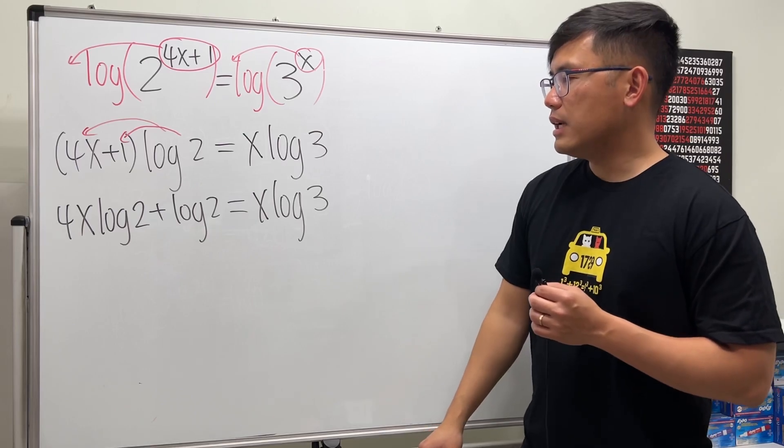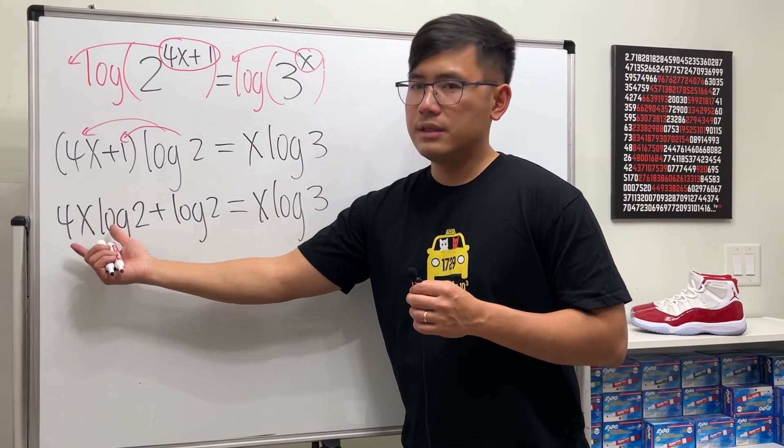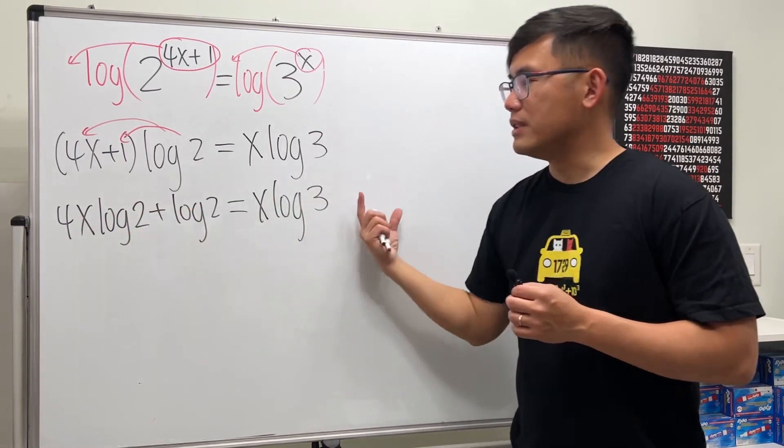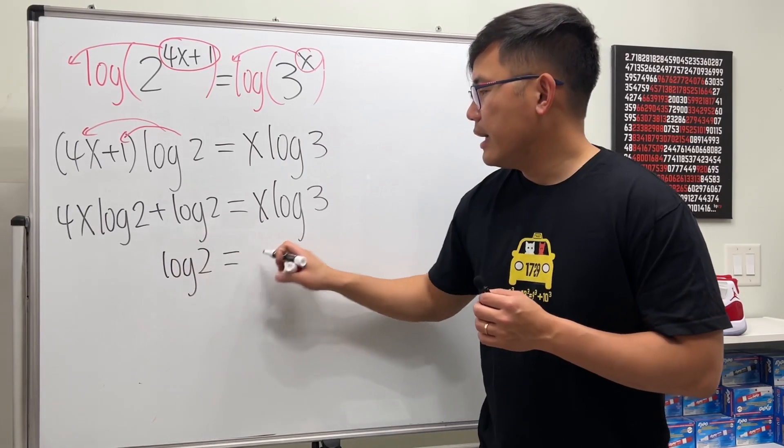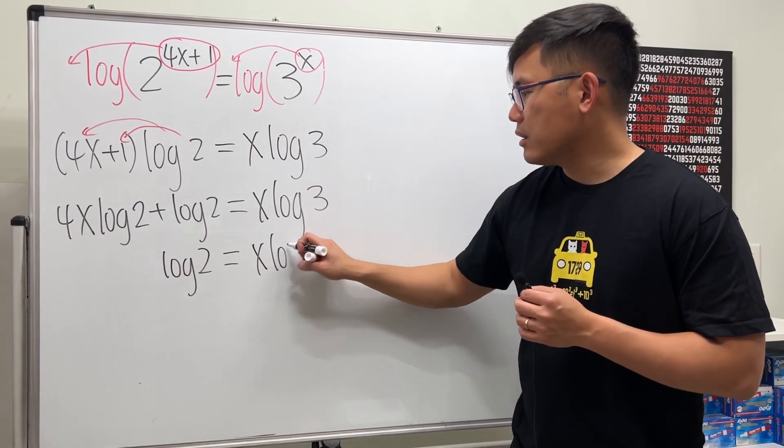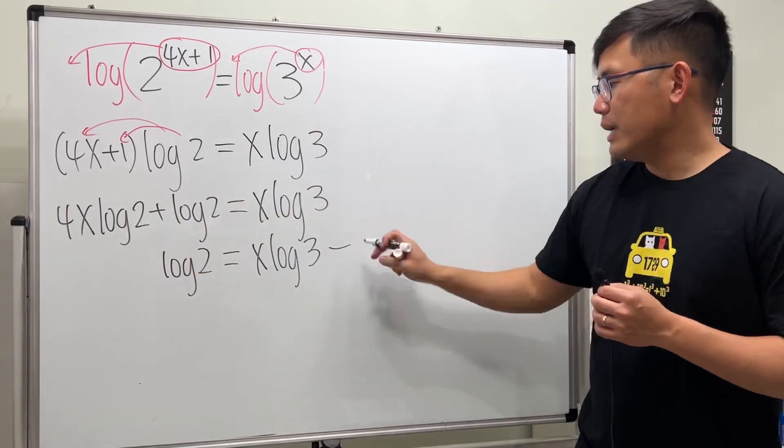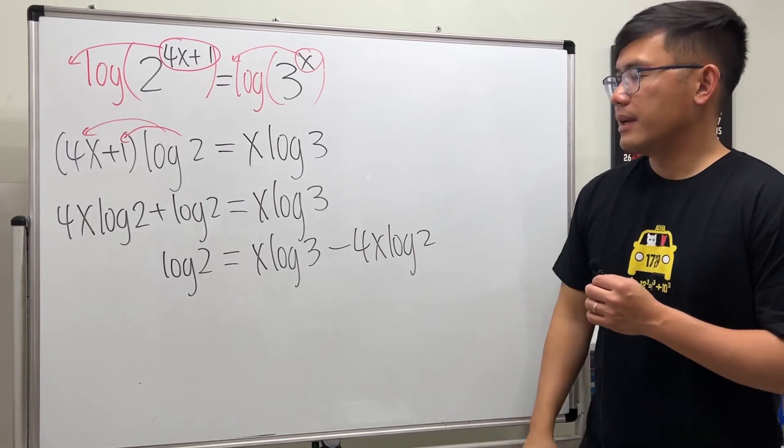And then we can see that, let's just move this term to the other side, because they have the x. But in fact, this right here doesn't have the x. So I think it's better if we move this here. So I will put log of 2 right here. And that's equal to x times log of 3, minus, and we have the 4x log of 2.